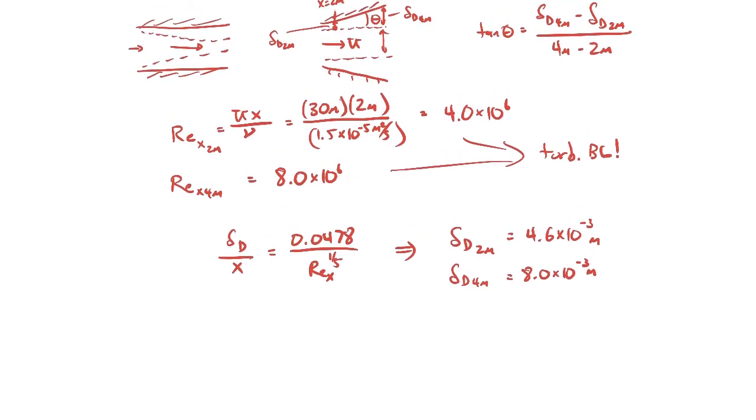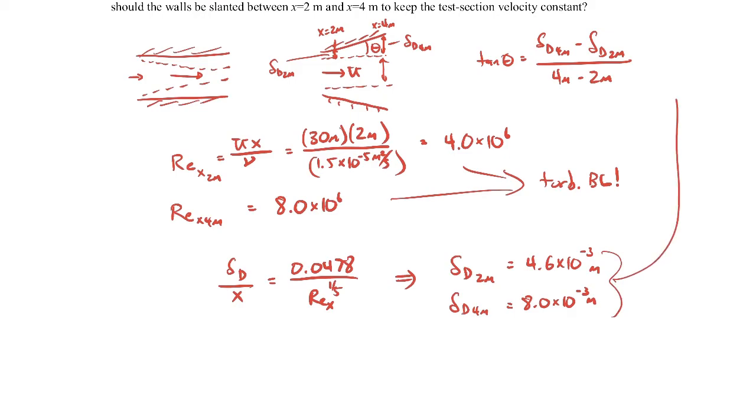So we can go ahead and plug these values in and then calculate for the angle. And when you do that, it comes out to be 0.1 degrees. So that means if we angle these walls outward by about 0.1 degrees, then the boundary layer growth will be such that the inviscid core will remain at a nominally constant velocity, at least between 2 meters and 4 meters.